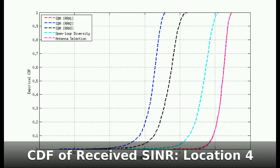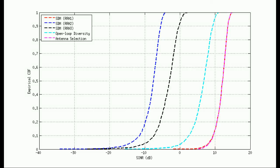At each measurement point we collect 1000 samples. Here you see for measurement point 4 the SNIR distribution for each transmission scheme.